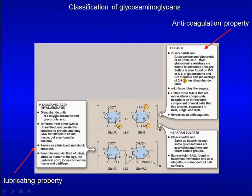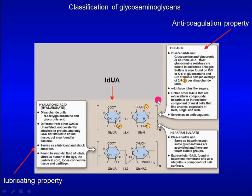Heparin and heparan sulfate are very similar. They have three major features. First, they are highly sulfated. Second, they also contain iduronic acid as the acidic sugar. Third, iduronic acid is often sulfated at the C2 position.